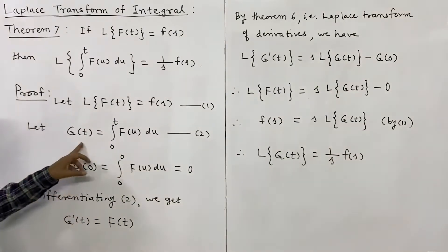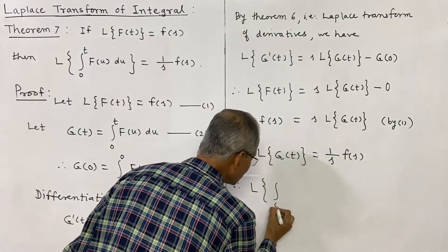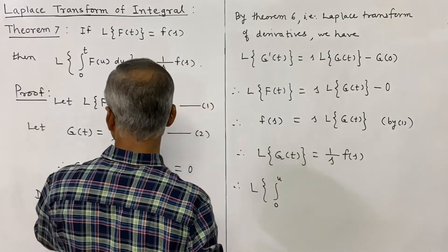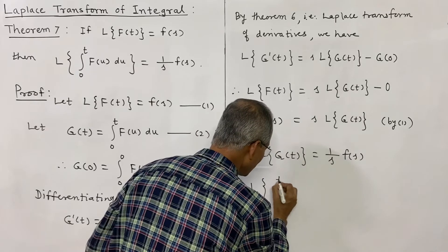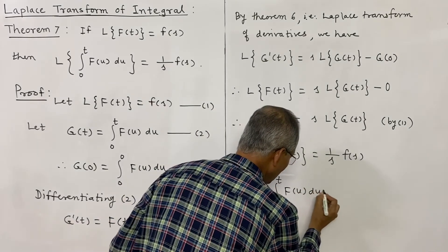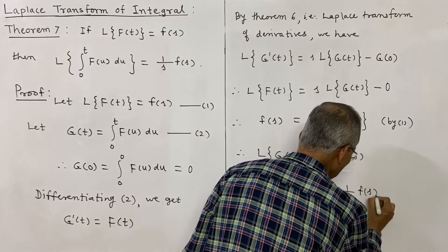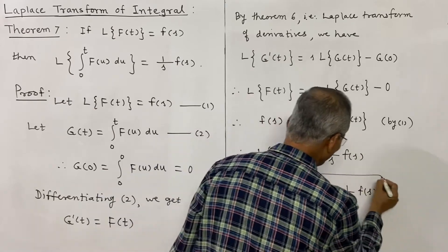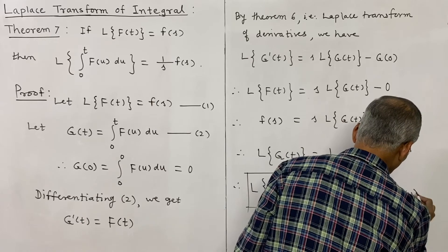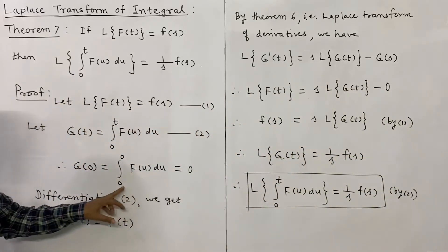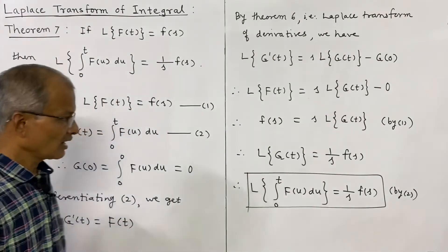But g(t) is defined as ∫₀ᵗ F(u) du from equation 2. So L{∫₀ᵗ F(u) du} = (1/s)·f(s). This is the result that we wanted to prove, and this follows by substituting the value of g(t) from equation 2.